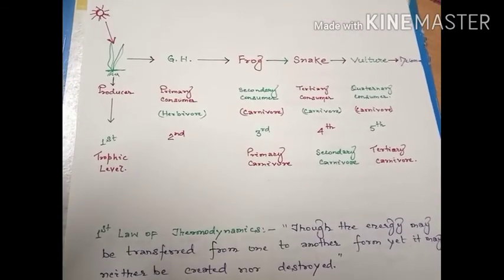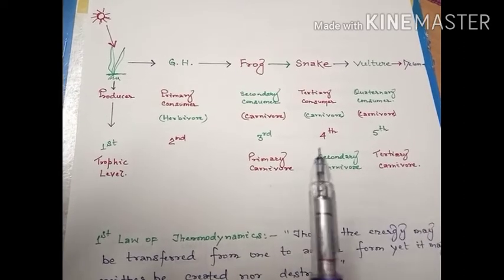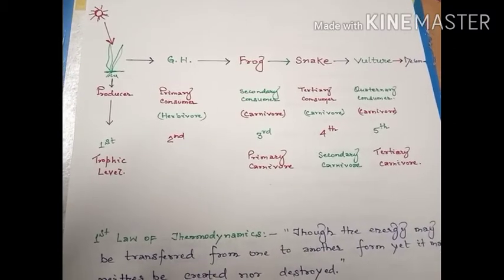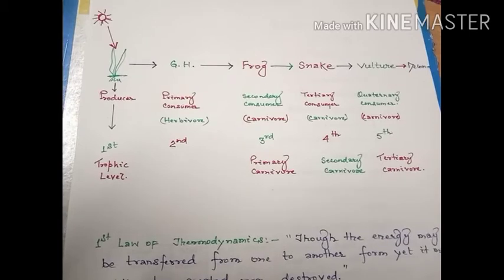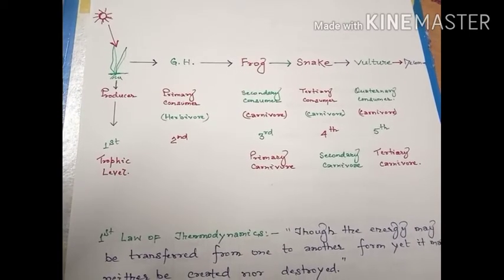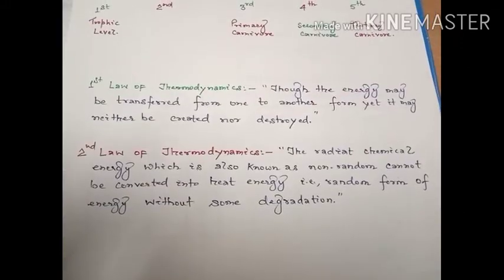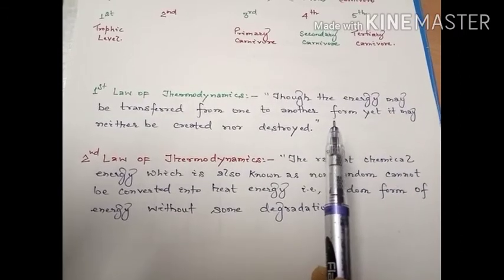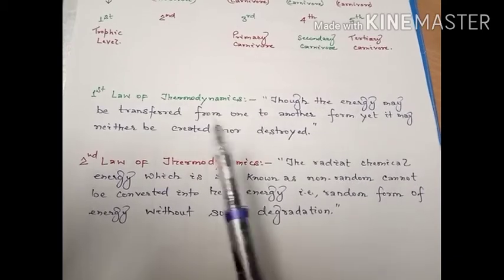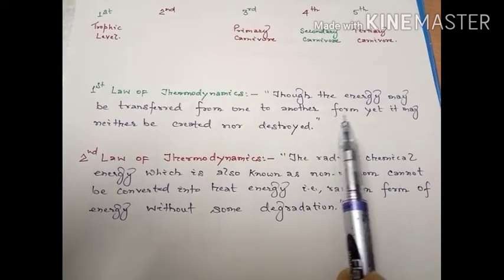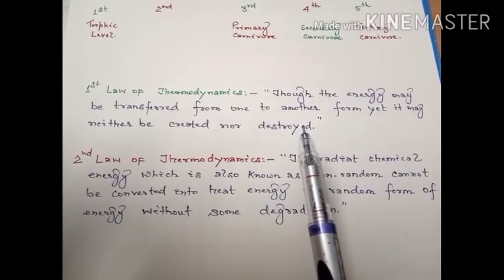Now we will discuss the transfer of energy. The transformation of any of these forms of energy in the process of working obviously results in conversion into heat energy, so the circulation of energy does not take place indefinitely. The movement of various forms of energy in a food chain is guided by two physical laws of thermodynamics. According to the first law of thermodynamics, also known as the law of conservation of energy, it states that energy may be transferred from one form to another, yet it may neither be created nor destroyed.